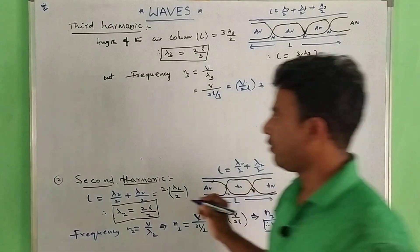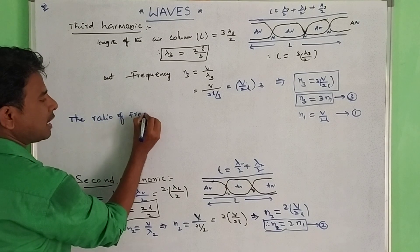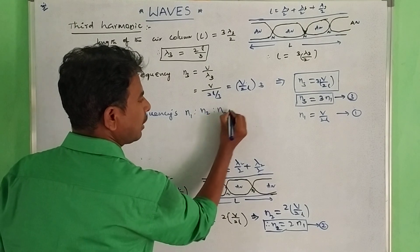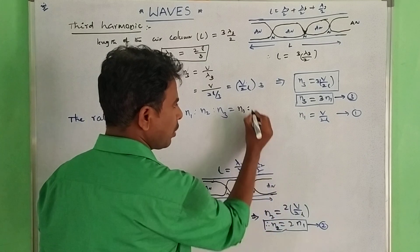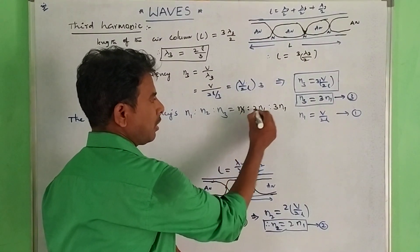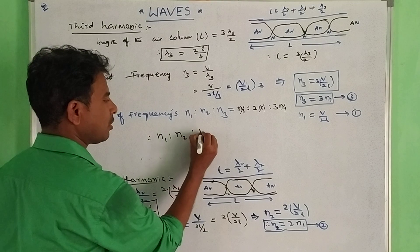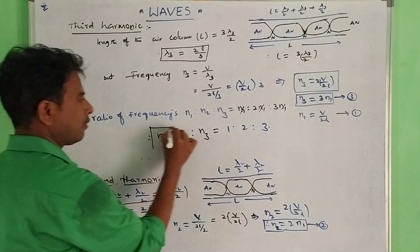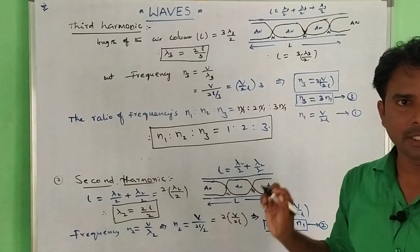The ratio of frequencies: N1 : N2 : N3 = N1 : 2N1 : 3N1. Cancelling N1 throughout, the resultant frequency ratio is N1 : N2 : N3 = 1 : 2 : 3.